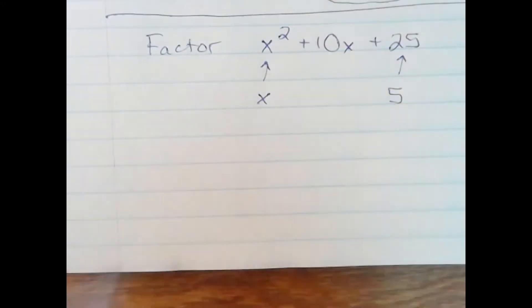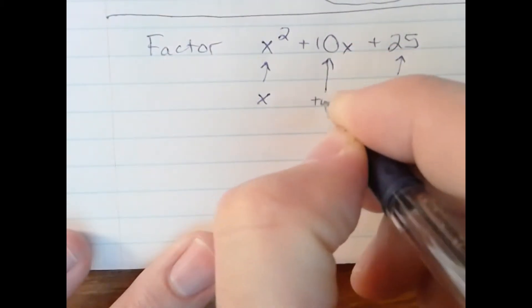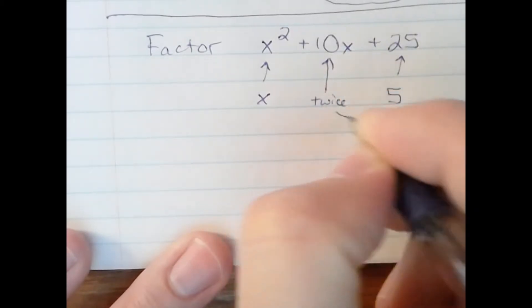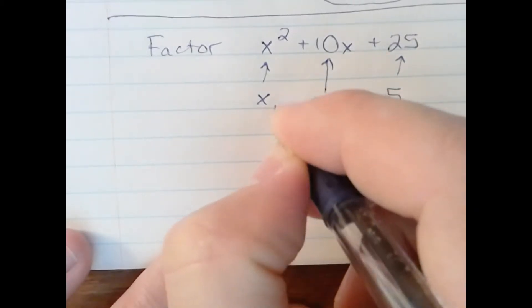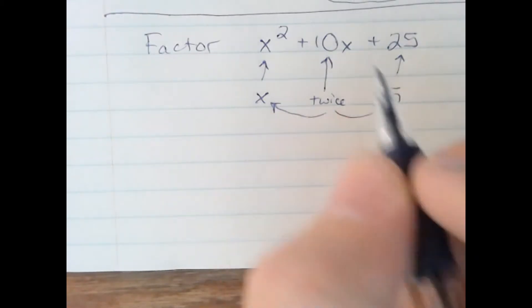Now, we know for sure if it's a perfect square trinomial, if this term here is twice the product of these two. In this case it is. 2 times x times 5 is 10x.